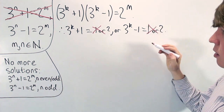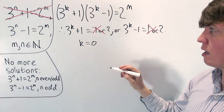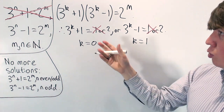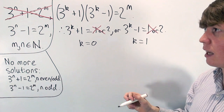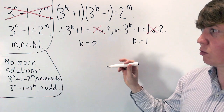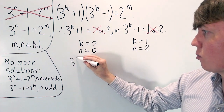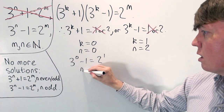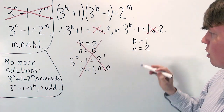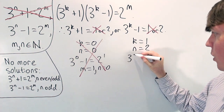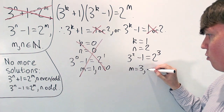In the first case we get k equals 0, and in the second case k equals 1. Any larger values of k are ruled out since we need one of these to equal 2. Since n equals 2k, here n equals 0 giving 3 to the 0 minus 1 equals 2 to the 1 — this is just a repeat of our m equals 1, n equals 0 solution. In the second case where k equals 1, n equals 2: 3 squared minus 1 is 9 minus 1 equals 8, or 2 to the 3. So we get a new solution: m equals 3, n equals 2. That gives us four solutions in total, which are exactly the four we had at the beginning, and we've now proven there are no others.